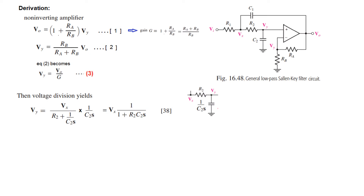Next, we look at the relation between VX and VY. I have drawn it separately. Instead of a capacitor, I have used 1/(SC2) as we do in S-domain circuits. VY can be found by voltage division: VY = VX × (1/SC2) / (R2 + 1/SC2). This is the third relation we will use.